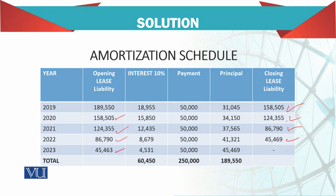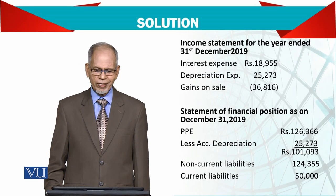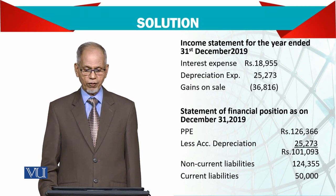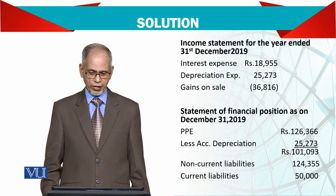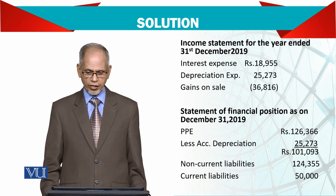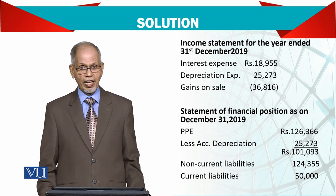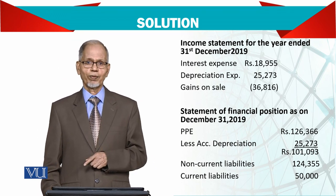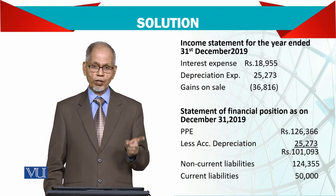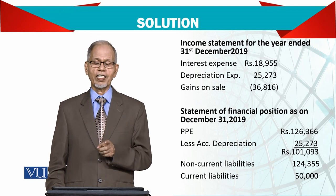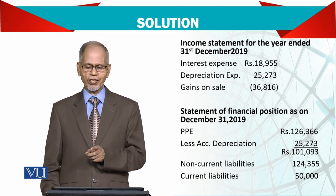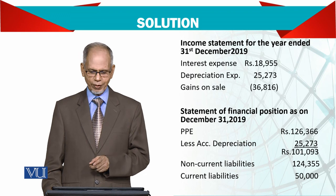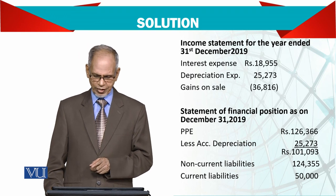For the income statement, you report the interest expense for the first year, depreciation expense on the right of use asset, and the gain on sale — because you sold your asset and made a gain, it is reported in the income statement.